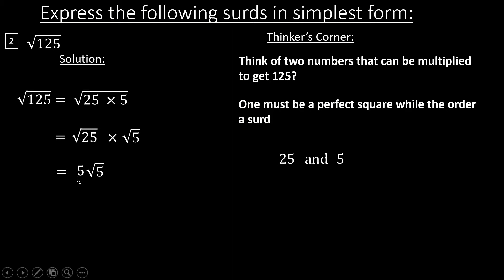When you are asked to simplify surds into their simplest form, step one: think of two numbers that can be multiplied to get that number. Step two: one of those numbers must be a perfect square, while the other must be a surd, which can be 2, 3, 5, 7, or 11. This is how we express surds in their simplest form.